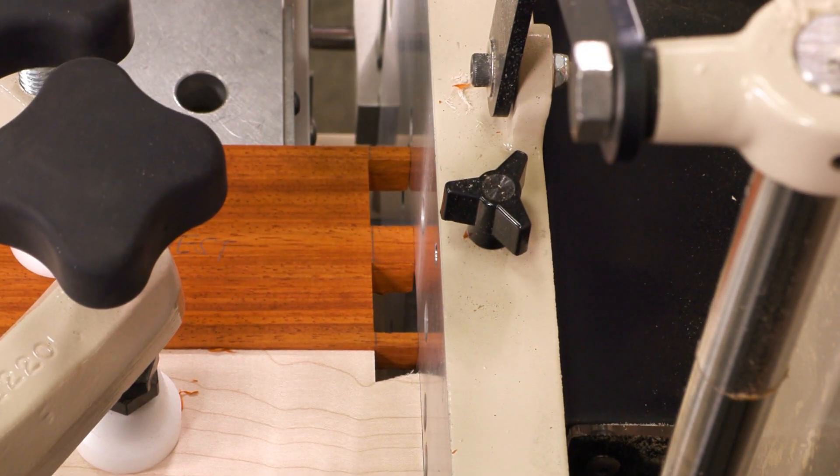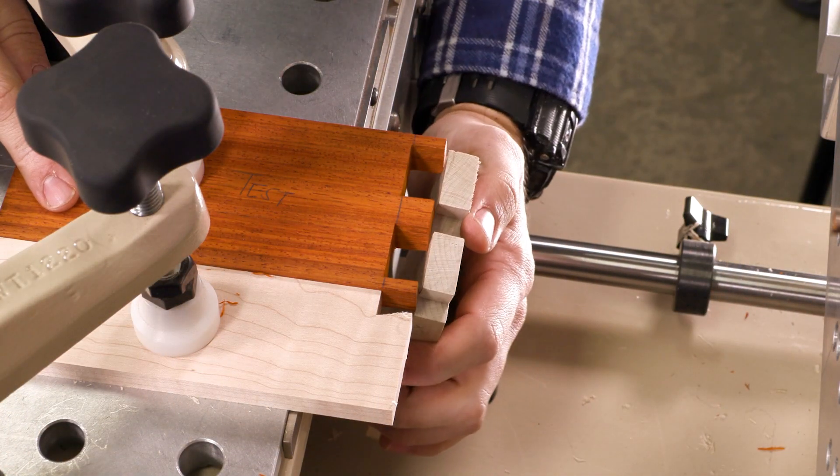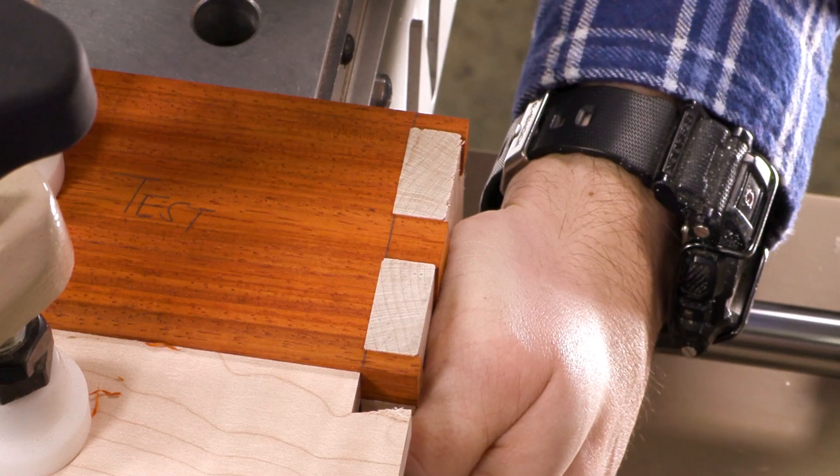Then return the horizontal table back to its starting position and make another pass. Repeat this process until you sneak up on the perfect fit.